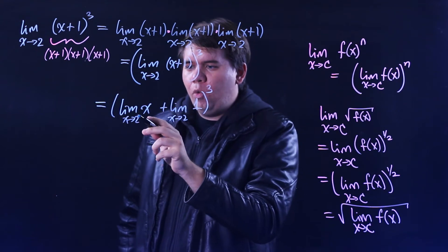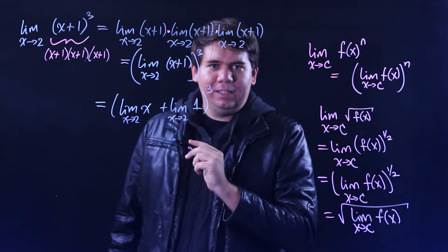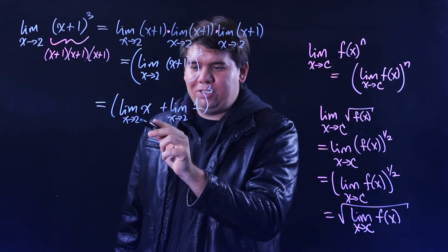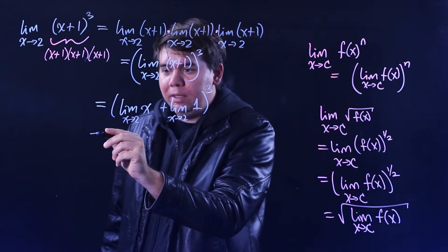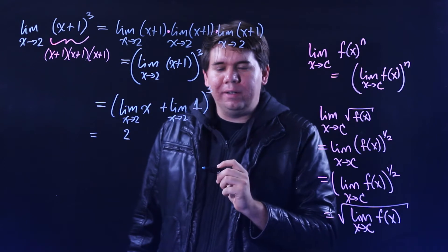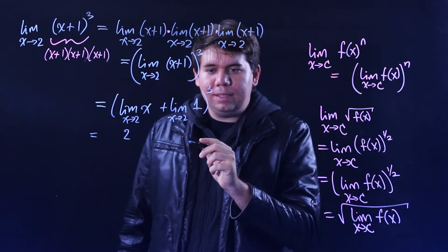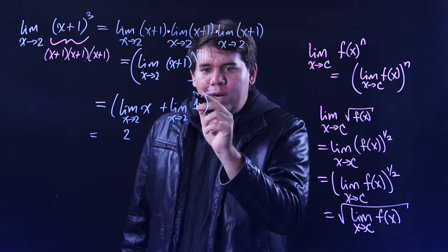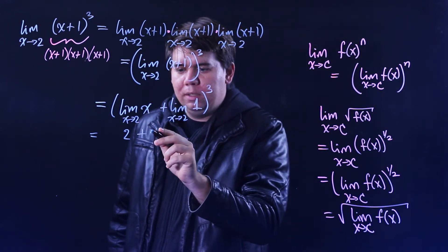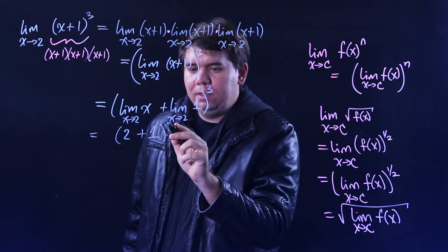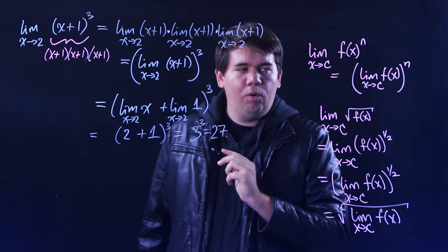What is the limit as x approaches 2 of x? What is x getting arbitrarily close to as x gets arbitrarily close to 2? It sounds redundant because it is — if x is approaching 2, then the limit of x is just 2. And the second function is a constant, always equal to 1, so no matter what x is, the limit is 1. So we get 2 plus 1, all raised to the third power, which gives you 3 cubed, or 27.